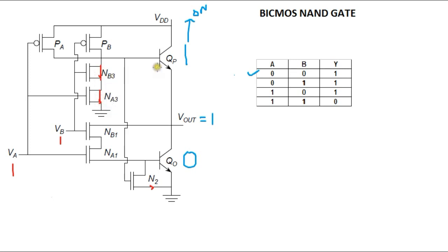Now let's see what is the role of NA3, NB3 and N2 transistors. Let's revisit case 1, where when both the inputs are low. When both the inputs are low, PA and PB will be on, so QP will get the current and QP will get turned on. It will pull the output Vout to VDD, which is 1.